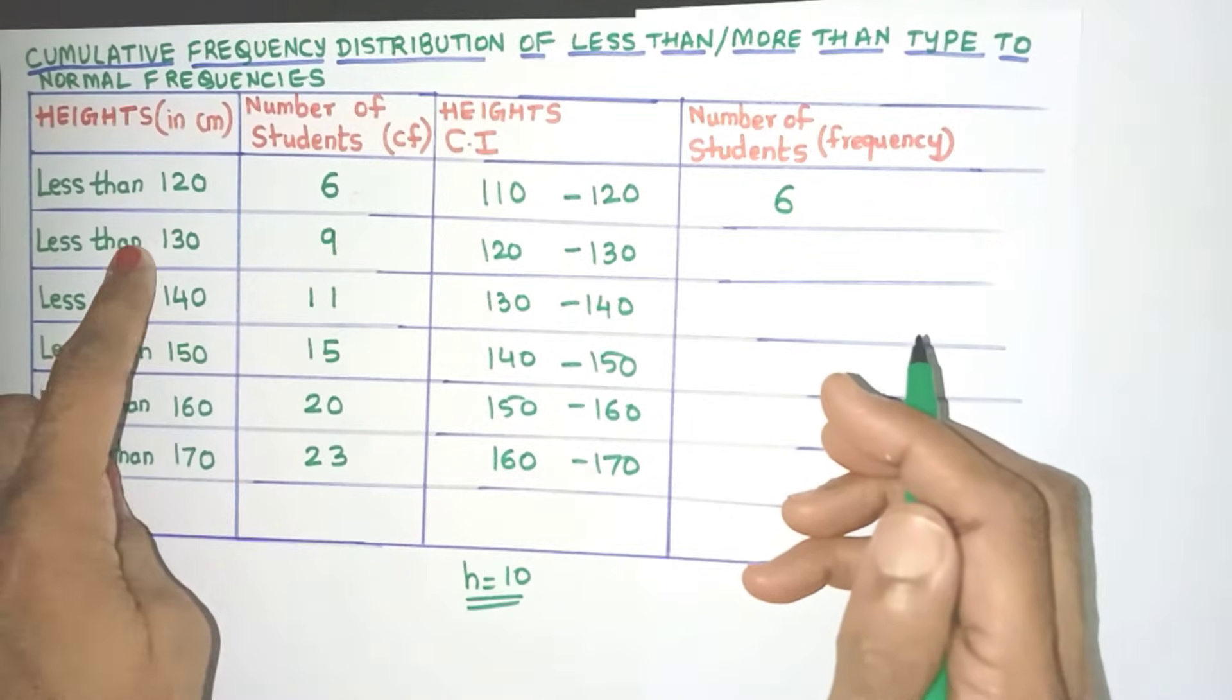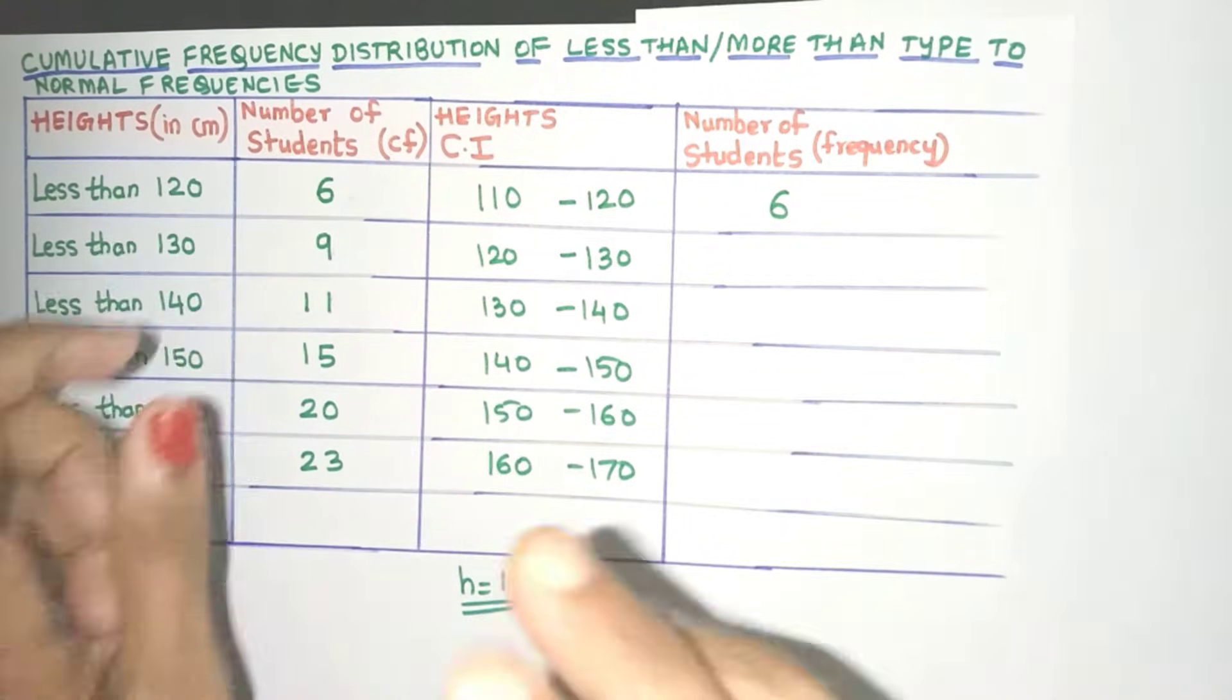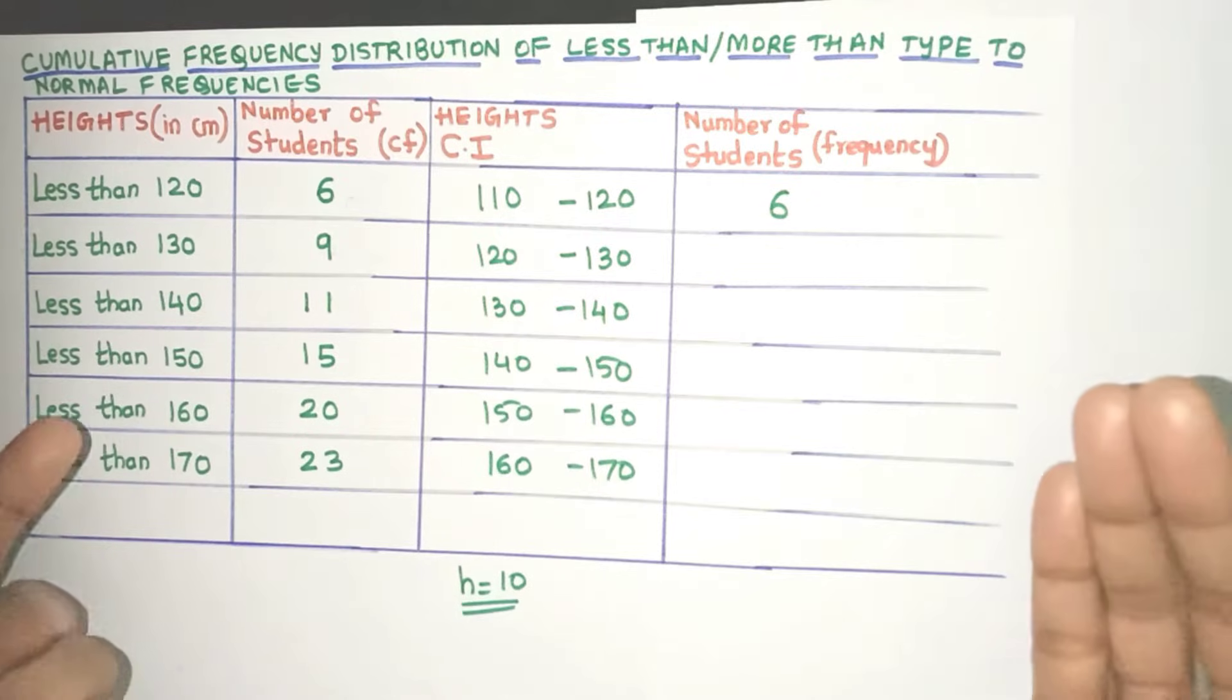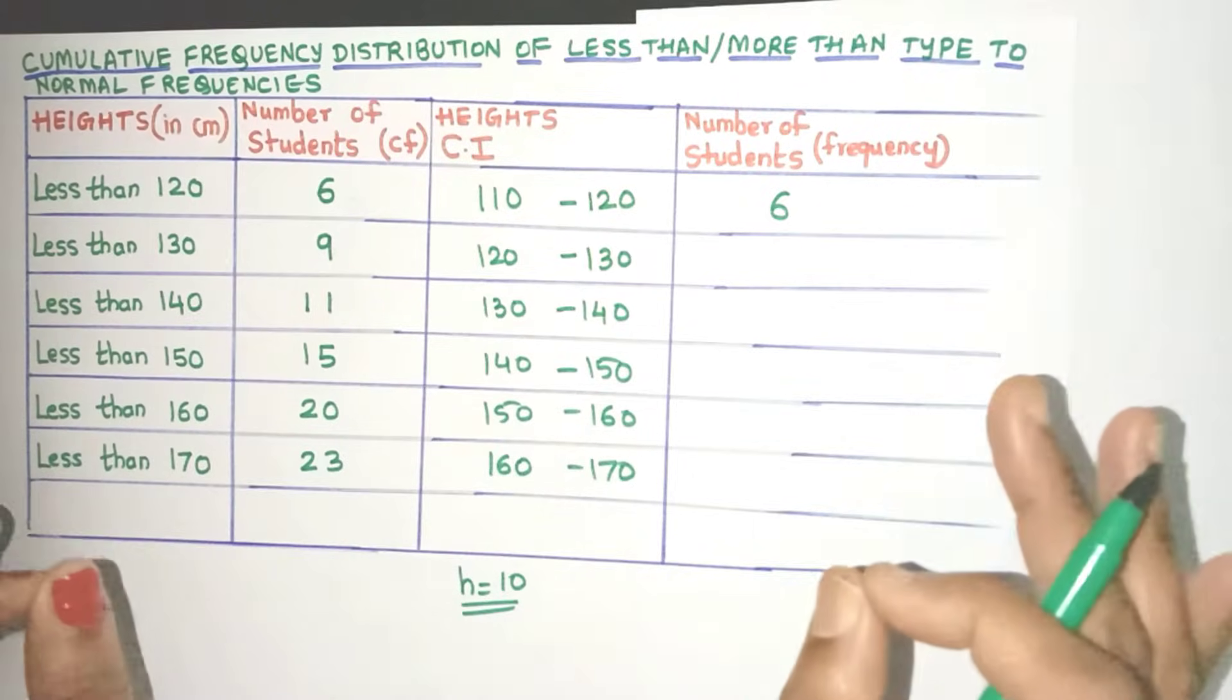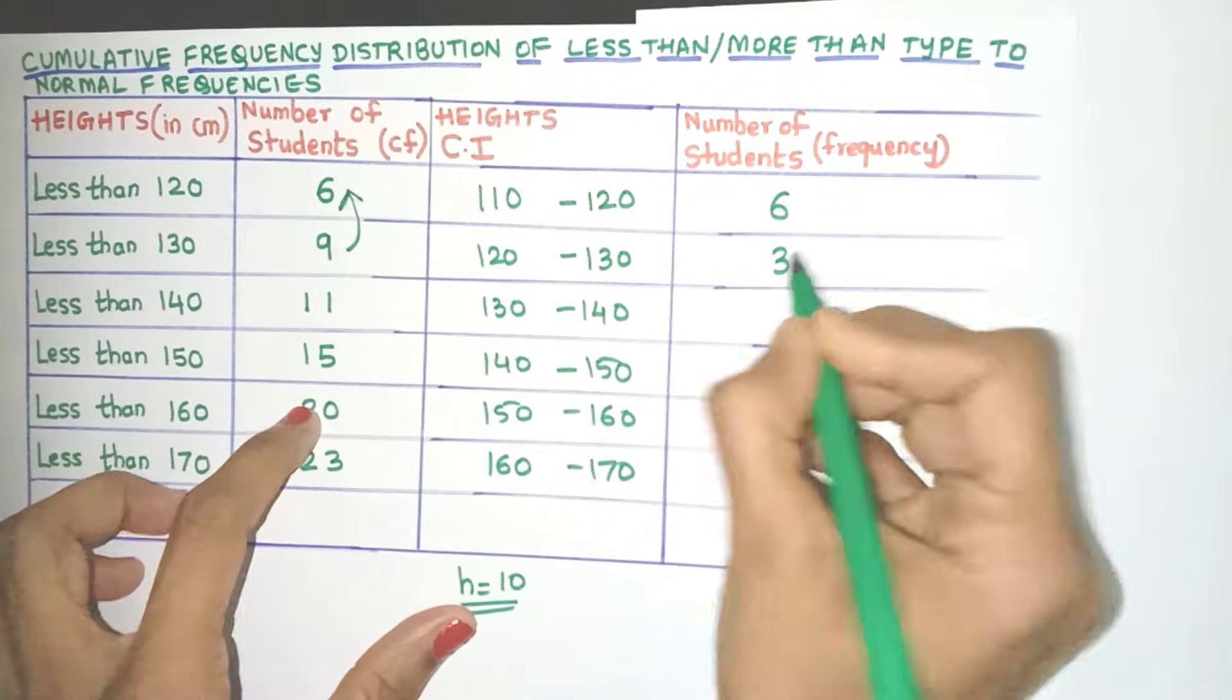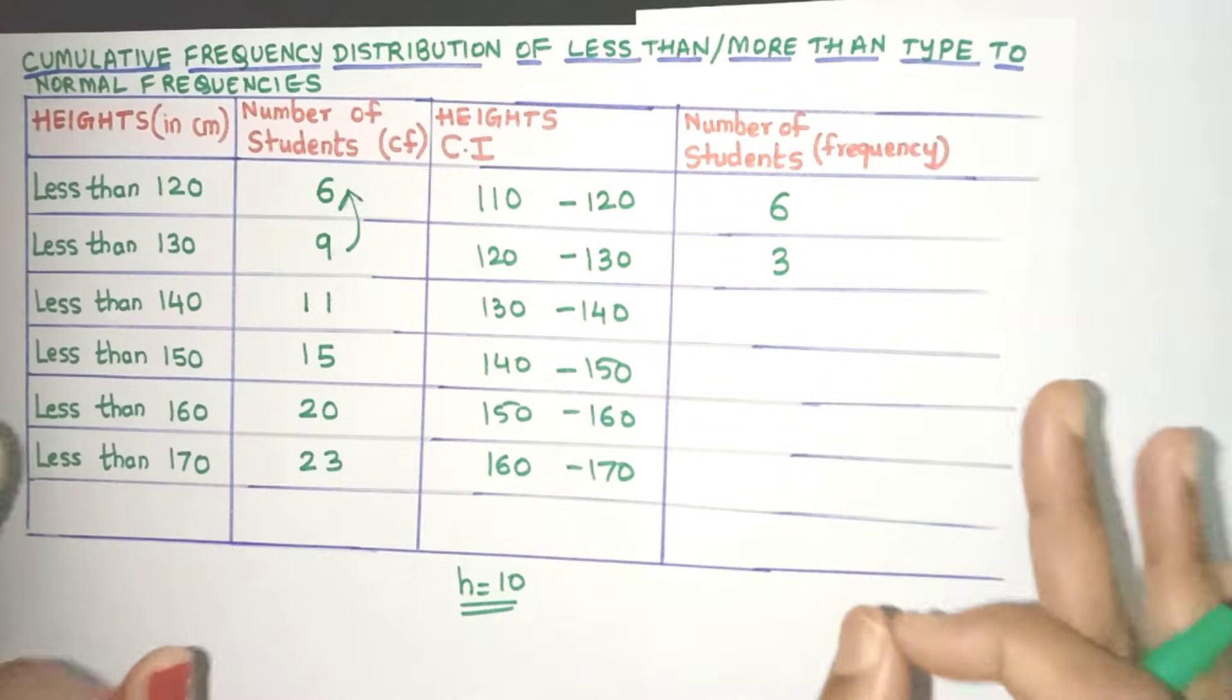Now let's come to the next one. Here there are 9 students who have height less than 130. Now does this include the 6 students who have height less than 120? Yes, because if the height is less than 120, automatically it will be also less than 130, right? But we want only 120 to 130 centimeter students. So what should we do? Yes, you just have to subtract 9 minus 6 and you will get 3. So the present CF minus the previous CF gives you the present frequency.